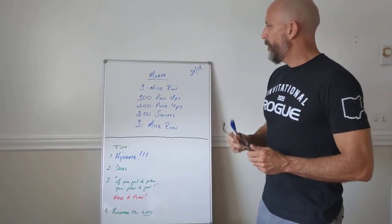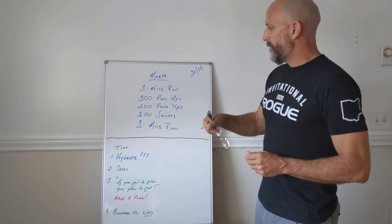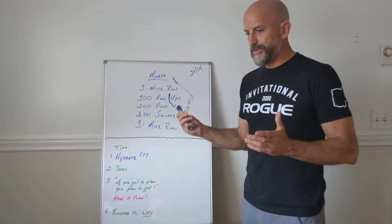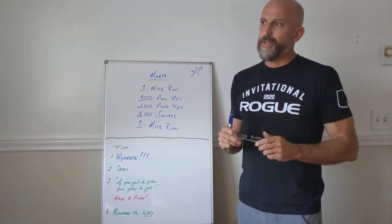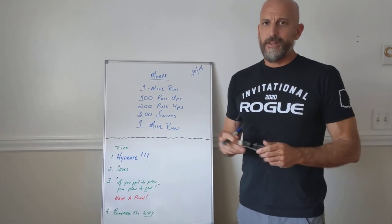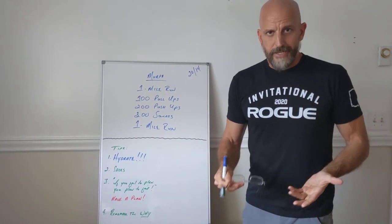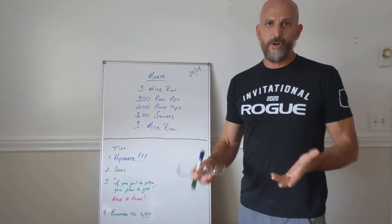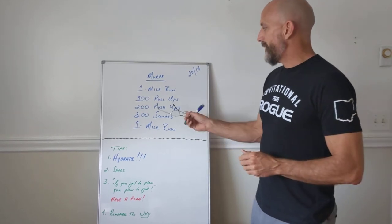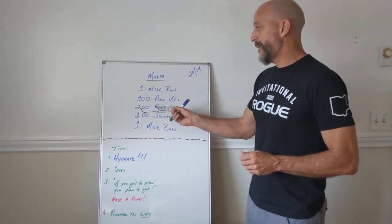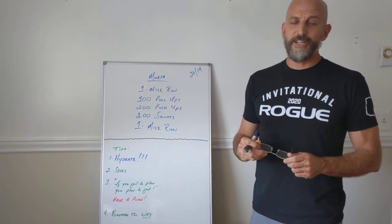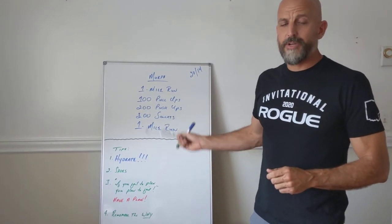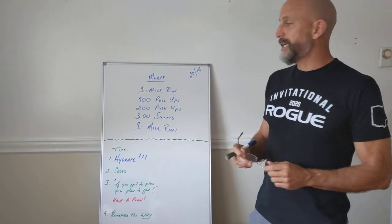It's a hero WOD. We can never repay Murph or the officers that defend us every day or the EMTs or the doctors, all the people out there that do so much for us every day that we never see. There's no way we can repay them, but we do what we can. And this is a way of doing what we can. We do this workout in memory of Murph. And when you're out there working out on Monday and you're in your 100th pushup and your shoulders are giving out and your hands are sore from doing pull-ups and you just can't even think about doing 300 squats, whatever the case may be, just remember Murph.